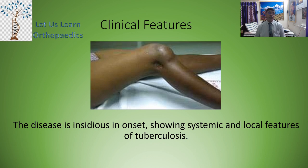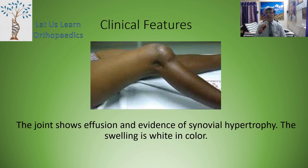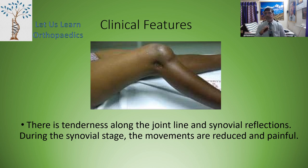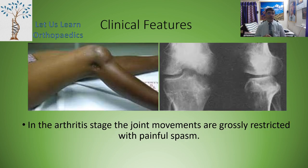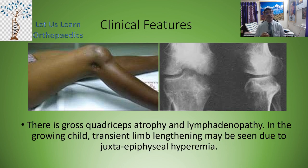Coming to the clinical features of tuberculosis of the knee: the disease is insidious in onset, showing systemic and local features of tuberculosis. The joint shows effusion and evidence of synovial hypertrophy; the swelling is white in color. There is tenderness along the joint line and the synovial reflections. During the synovial stage, movements are reduced and painful. In the arthritis stage, joint movements are grossly restricted with painful muscle spasm, gross quadriceps atrophy, and lymphadenopathy. In the growing child, a transient limb lengthening may be seen due to juxta-epiphyseal hyperemia.